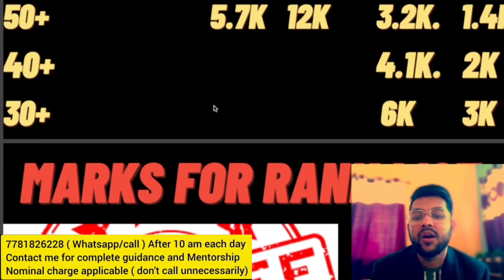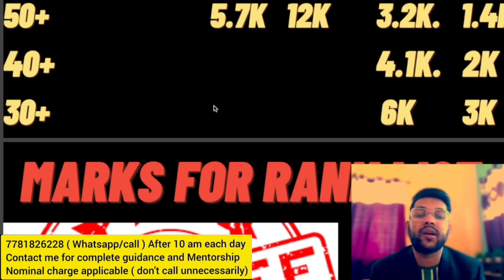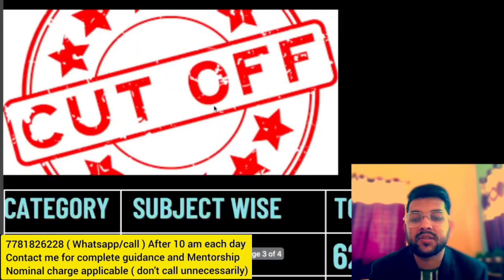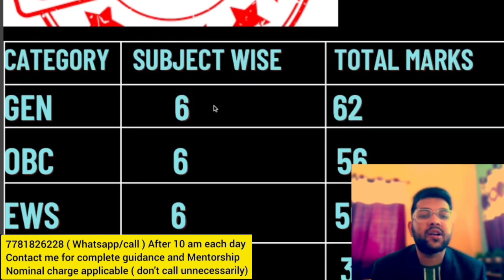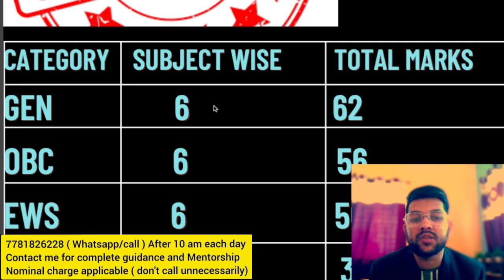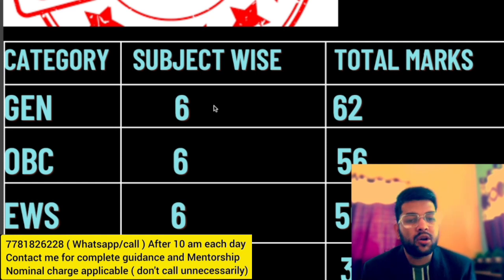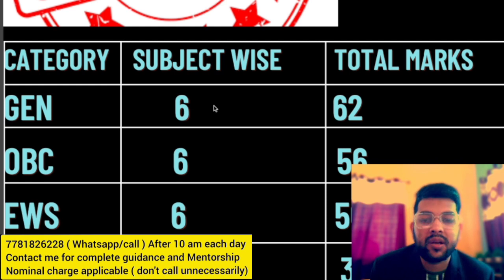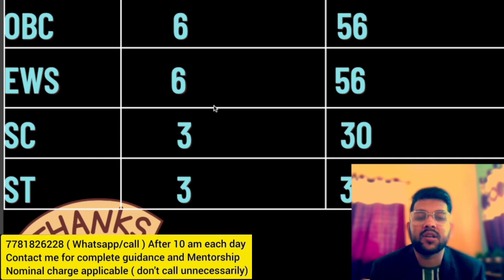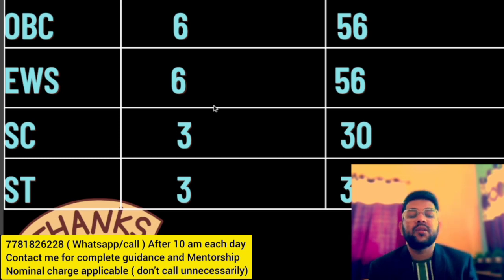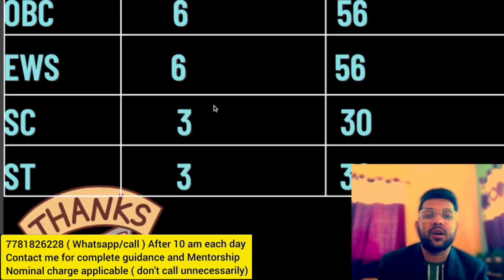Now for the marks required to be included in the JEE Advanced rank list: minimum subject-wise marks are 6 marks for General, EWS, and OBC categories, with a total of 62 marks for General, and 56 marks for OBC and EWS. This is expected — there may be one or two marks up or down, but almost the same cutoff will be there. For SC and ST, three marks subject-wise and a total of 30 aggregate marks are required.